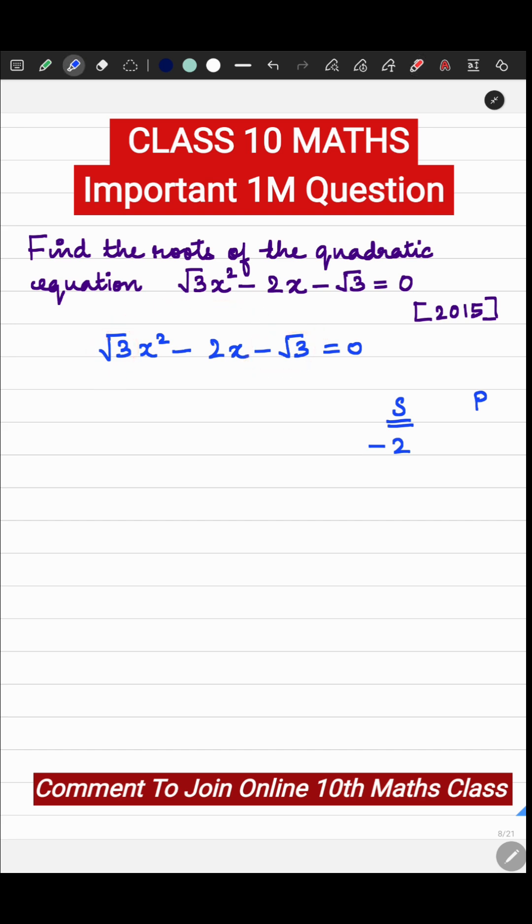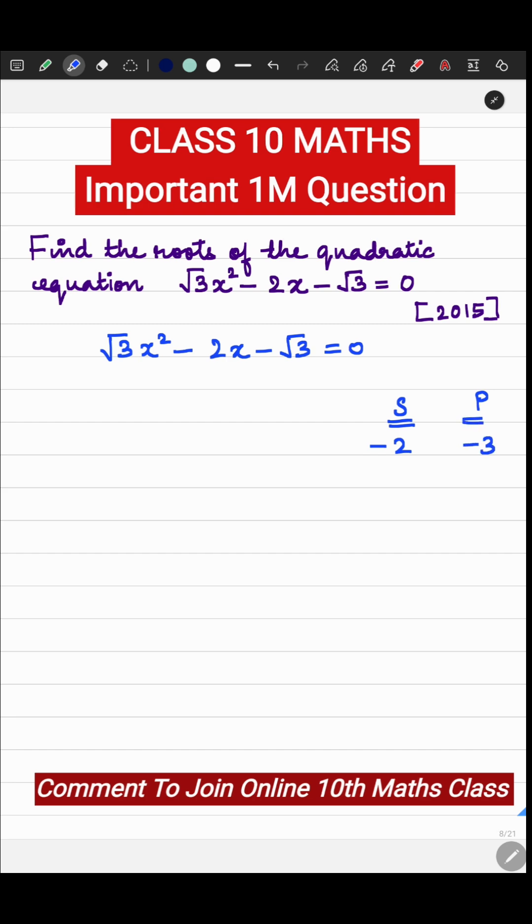So what is root 3 multiplied by minus root 3? It is minus 3. Now you have to find the two numbers whose sum will be minus 2 whose product will be minus 3.